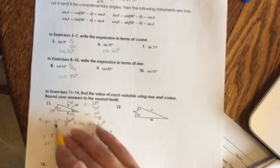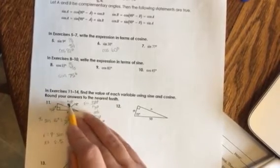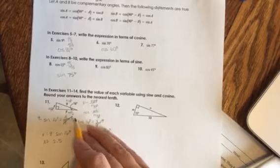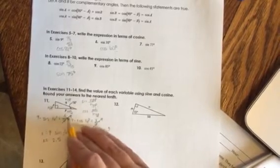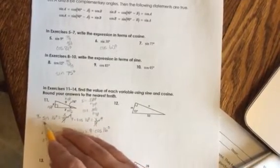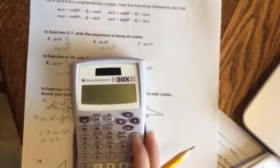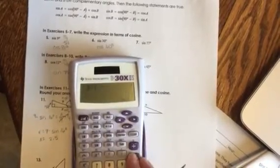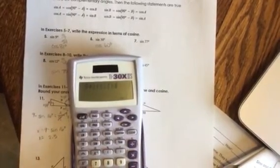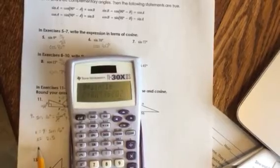The sine of 16 degrees is equal to X over 9, so I'm going to multiply both sides by 9 to get rid of it. X is going to be 9 times the sine of 16 degrees. If I use my calculator, I'm going to do 9 times the sine of 16 degrees, which is going to be 2.5.